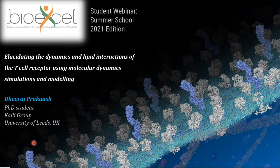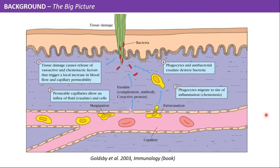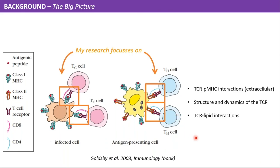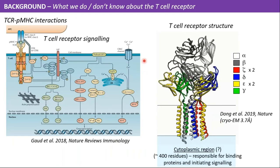For a broad immunological background: imagine a small cut in your skin causing a bacterial invasion. Dendritic cells come from your capillaries to reach these antigens and engulf them. They then interact with T cells, and the swallowed antigens are broken down so a small peptide fragment is presented via an MHC molecule to the T cell receptor on the T cell plasma membrane. My research focuses on this initial phase of T cell signaling — specifically the structure and dynamics of the TCR and its lipid interactions.